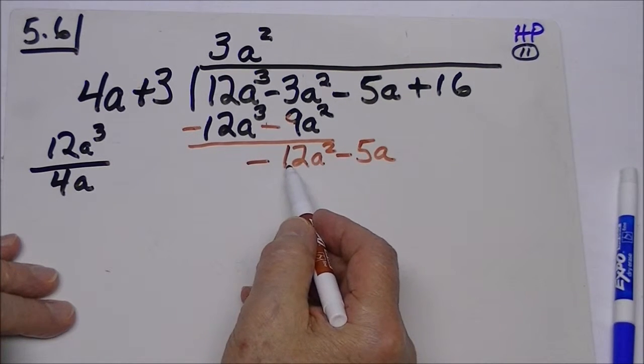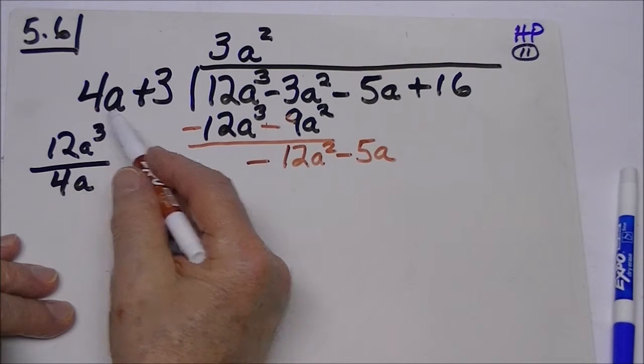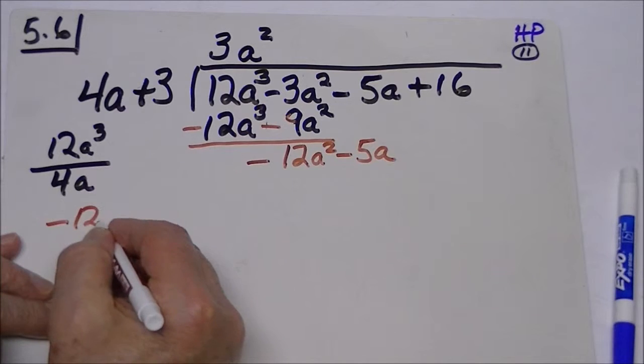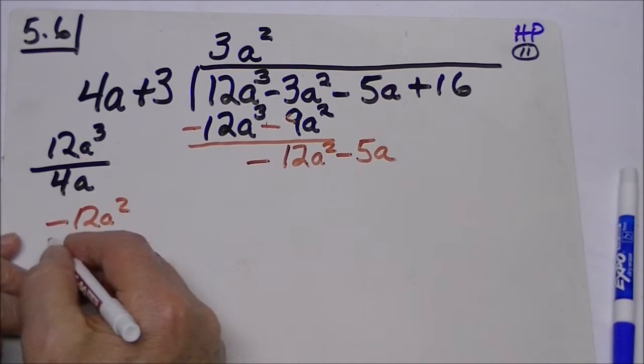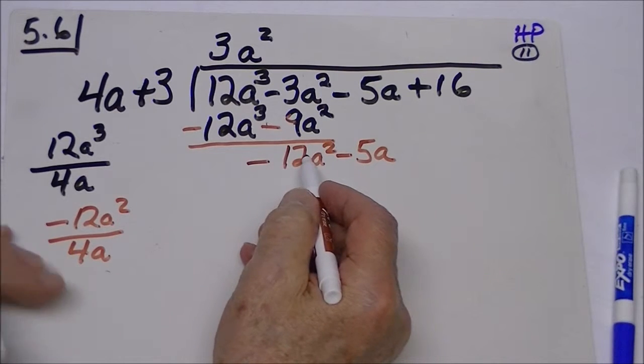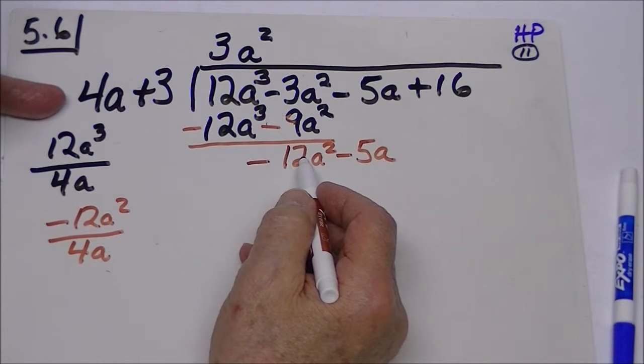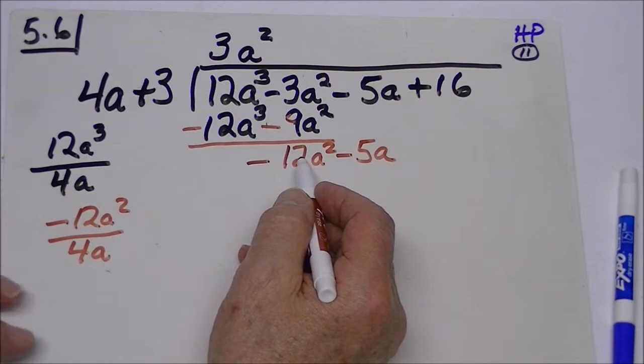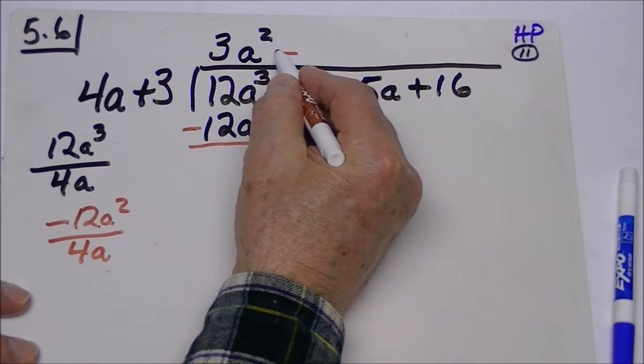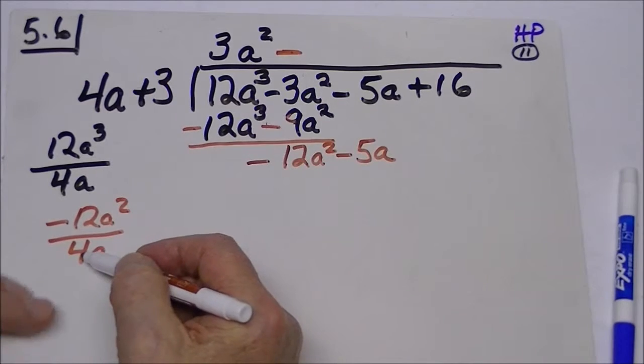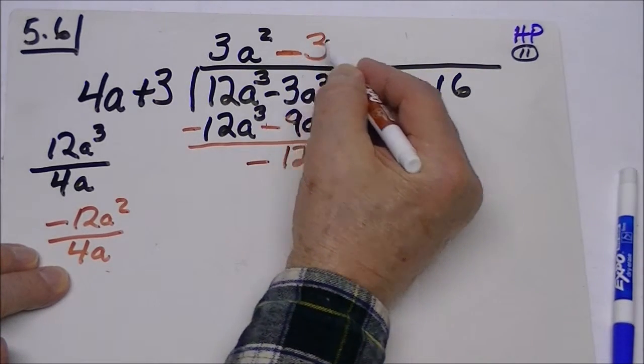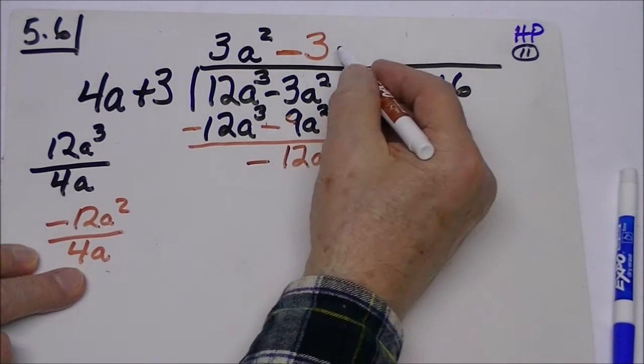And once again, if we want to say how many times does this go into this, we just set it up over here. So we're going to take this and divide it by 4a. Now our sign will be negative, and 4 goes into 12 three times, and we have an a.